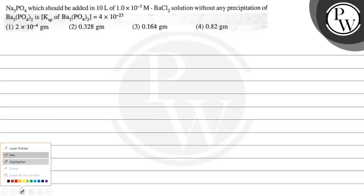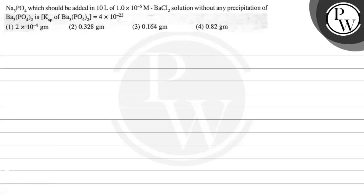Let's read this question. The question says: Na3PO4 should be added to 10 litres of 1×10⁻⁵ molar BaCl2 solution without any precipitation of Ba3(PO4)2. The given solubility product Ksp for Ba3(PO4)2 is equal to 4×10⁻²³.